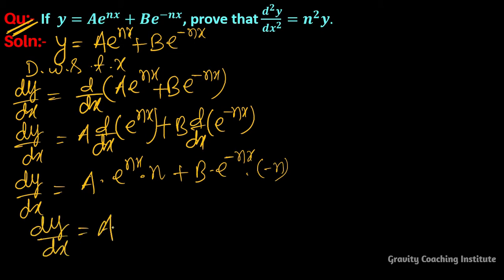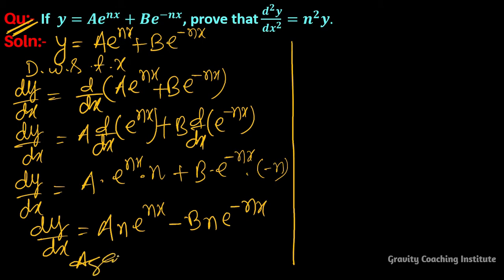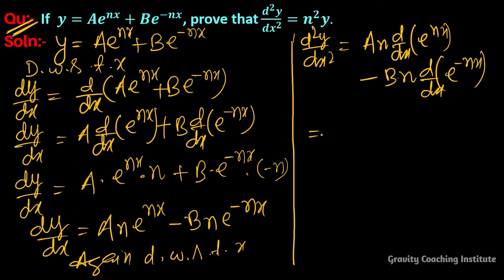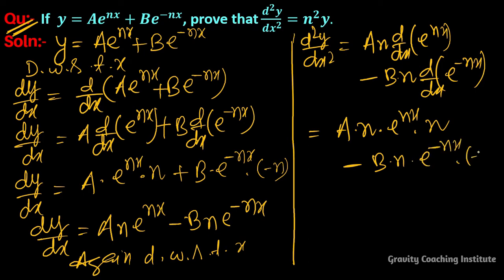So dy/dx equals an·e to the power nx minus bn·e to the power minus nx. Again, differentiate with respect to x. So d²y/dx² equals an into differentiation of e to the power nx minus bn into differentiation of e to the power minus nx. So d²y/dx² equals an into e to the power nx into n minus bn into e to the power minus nx into minus n.